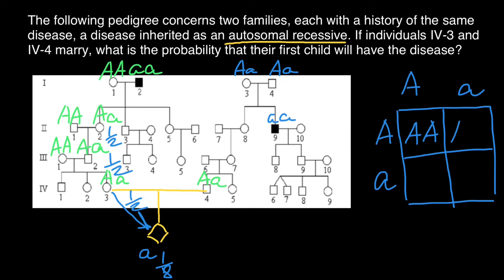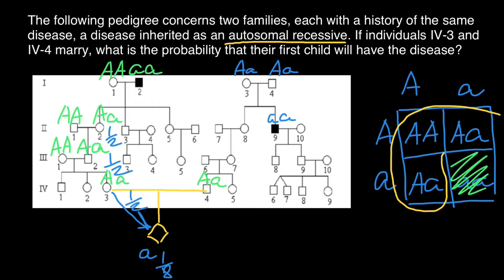The Punnett square gives us: capital A capital A, capital A small a, capital A small a, and small a small a. As you know, this female doesn't belong to the homozygous recessive genotype — otherwise she would be affected just like her brother, and we know she is not affected. That means she belongs to one of the remaining three genotypes. Her probability to be heterozygous is two out of three — so two thirds.